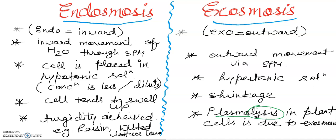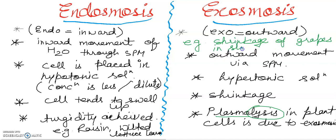जब plasma membrane या cell membrane rupture हो रही है, तो जितना भी water content है वह बाहर चला जाएगा, इस वजह से अंदर shrinkage होगा। जैसे grapes में shrinkage होता है जब हम उन्हें strong sugar solution में रख दें। Shrinkage of grapes when immersed in a strong sugar solution — due to exosmosis and a strong hypertonic solution outside the grapes.